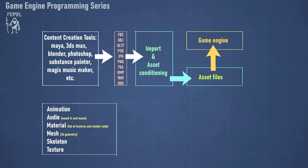We'll also have meshes, skeletons, and textures. Some parts of the asset pipeline are used by all asset types, but import and asset conditioning is mostly unique for each type. Therefore we need to start with one of these assets to lay out the general path, and then we can reuse parts of that pipeline. Today I would like to start with the geometry pipeline.